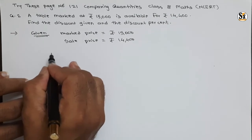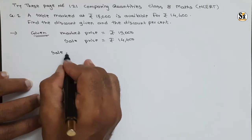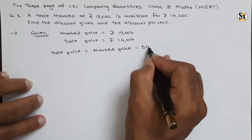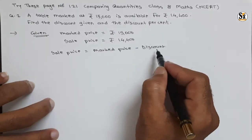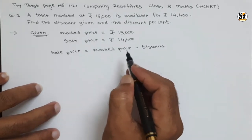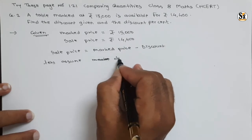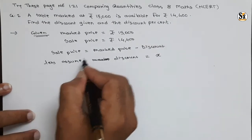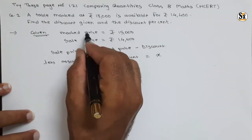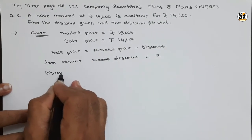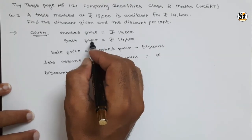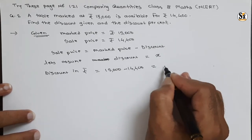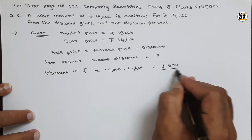The formula is: sale price equals mark price minus discount. Since a discount is given, sale price is less than mark price. Discount in rupees equals the difference between mark price and sale price: 15,000 minus 14,400, giving rupees 600. So the discount in rupees is 600.